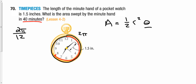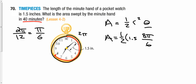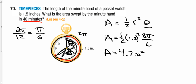Dividing 2π by 12 sectors gives π/6 per sector. Going from 12 to 8 covers 8 sectors, giving 8π/6 or 4π/3 for theta. Plugging in: area = ½ · (1.5)² · (4π/3) ≈ 4.7 square inches. That's the area swept by the minute hand. If asked for two sectors, you would add or subtract them.